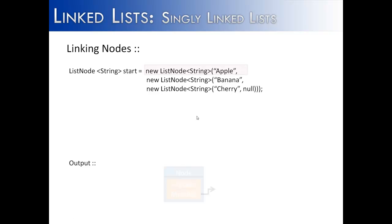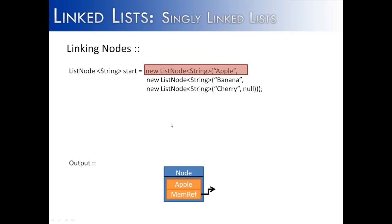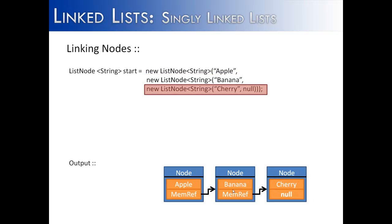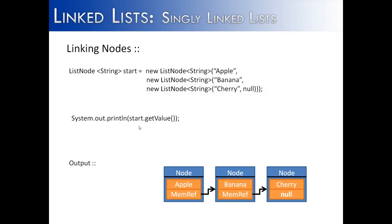We create apple with a memory reference to banana, and then we create another node with cherry as the value, referenced by banana. They are now linked together, with the last node having null meaning we've reached the end. To print the values using our list node class, we use system.out.println start.getValue(), which prints apple. Then to get the next value we say start.getNext().getValue(), which prints banana.